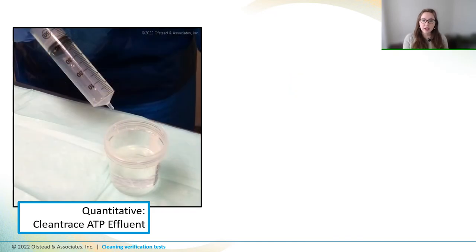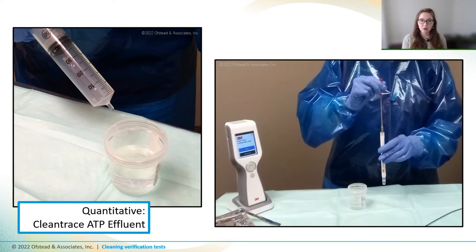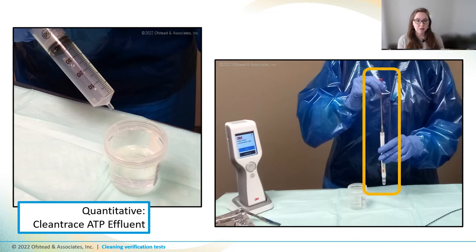You can also do ATP tests of effluent by flushing the channel with sterile water and then dunking that little wand in the sample before placing it in the luminometer for analysis. Now this wand has little ridges on the end that get filled with effluent, so it's important to hold the wand straight up and down so that none of those droplets fall off when you're inserting it into that sleeve.